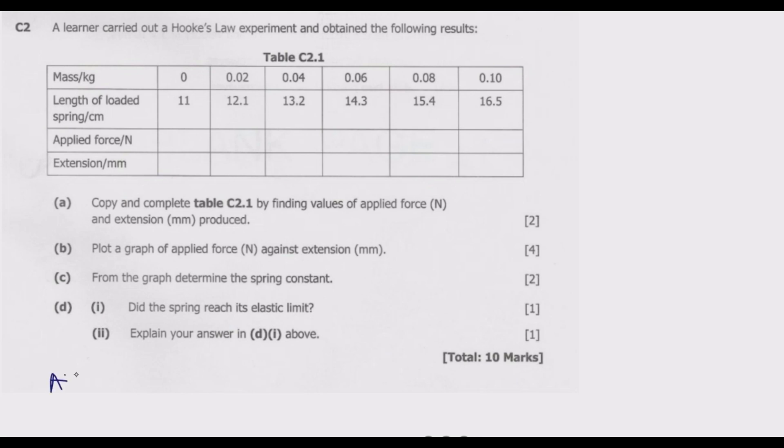Applied force will be equal to weight, which is given by mass times gravity. Gravity is basically 10 Newton per kg. To find applied force when mass is zero, we multiply zero times 10, we end up with zero Newton. When the mass is 0.02, you multiply by 10, you end up with 0.2 Newton. Similarly we'll do the same here: this will be 0.4, this will be 0.6, then 0.8, then the last one is 0.1 times 10 which is 1 Newton.